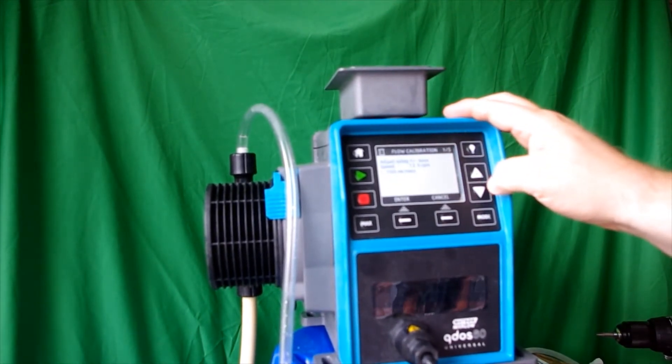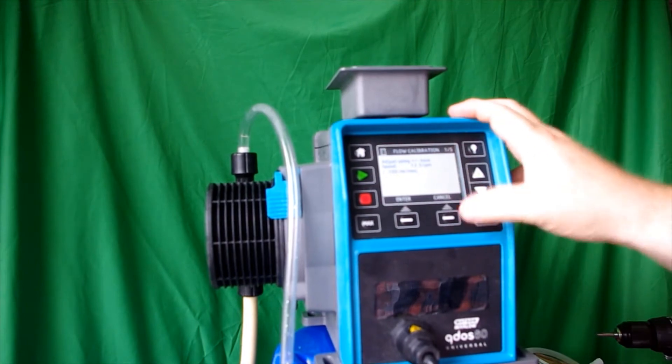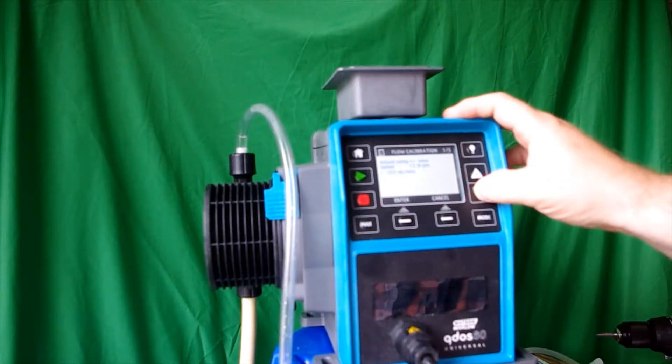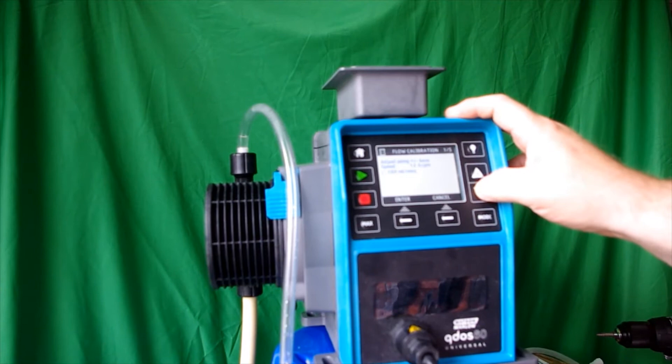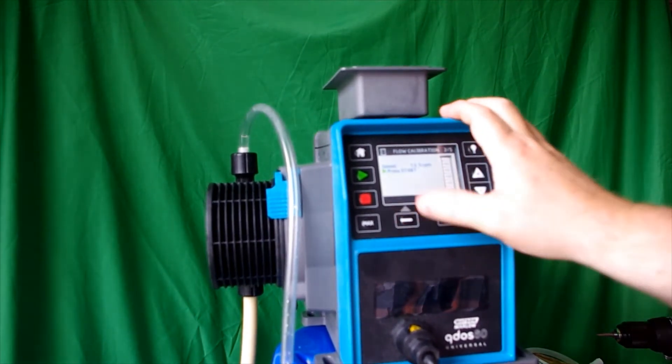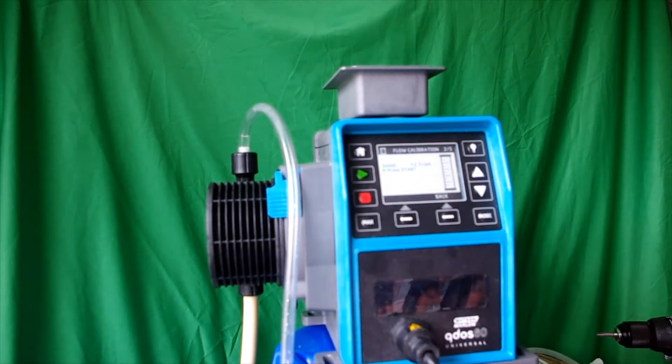If you wanted to adjust it, you use your up and down arrow key to get you within 10 or 15 percent of your average flow rate and press enter. Now it says get ready to go, get your calibration column, your graduated cylinder ready to go, get your stopwatch ready to go and zero it out if you want to use a stopwatch.